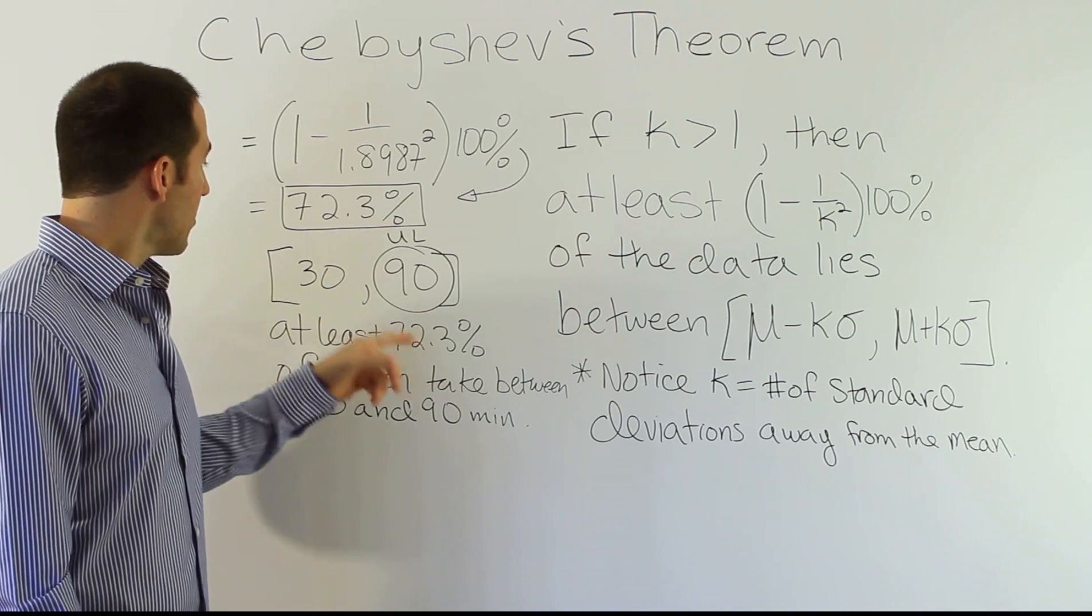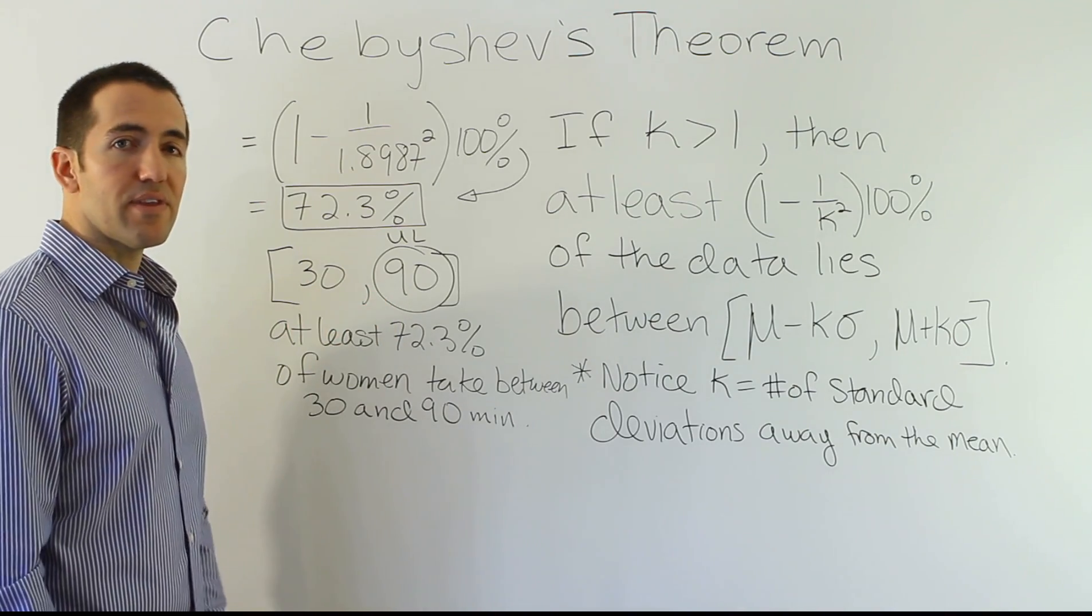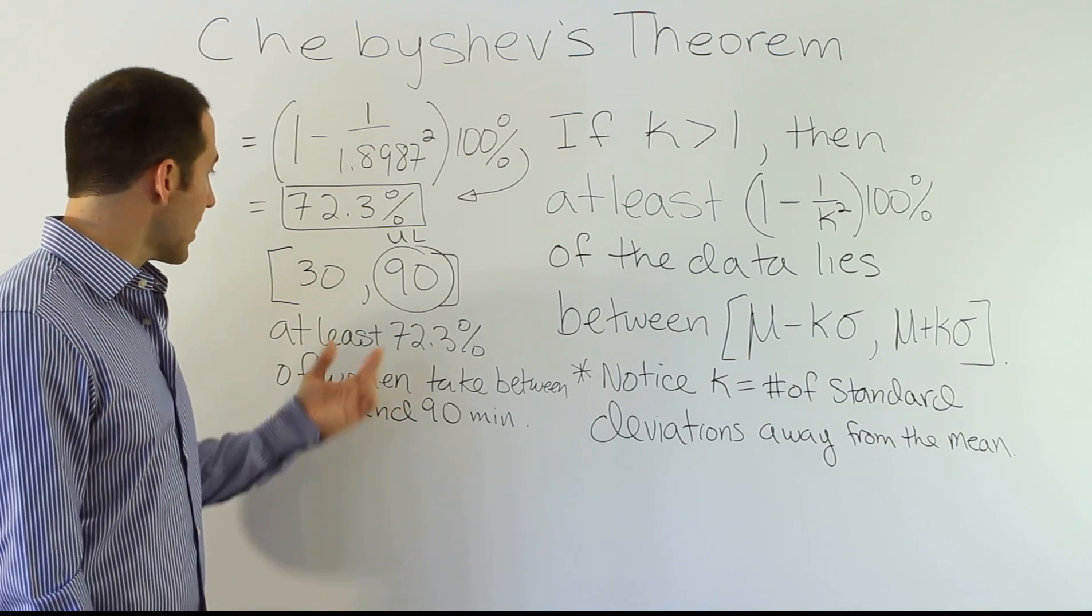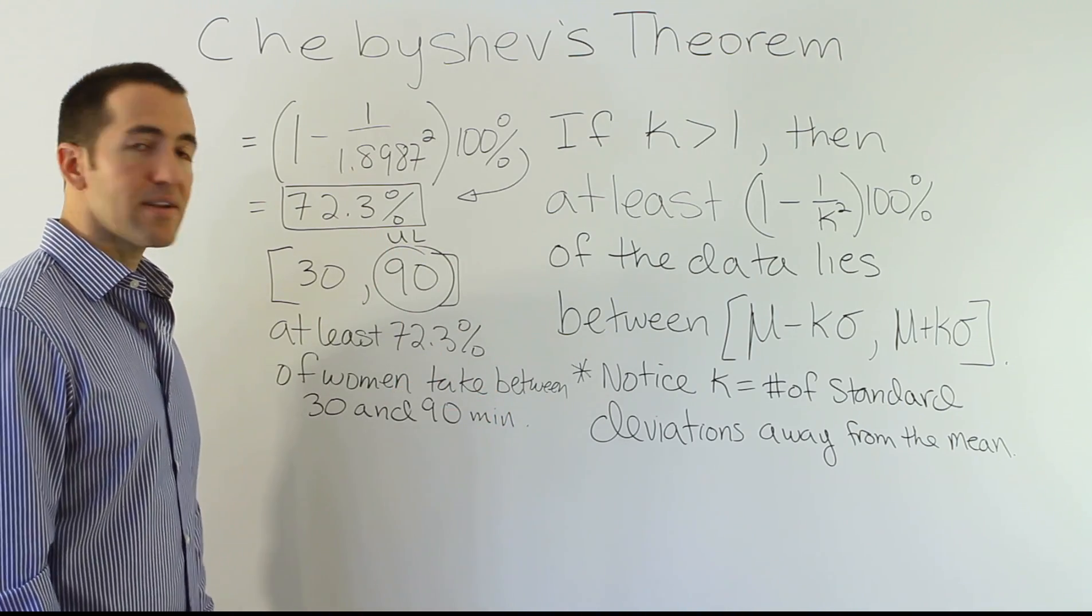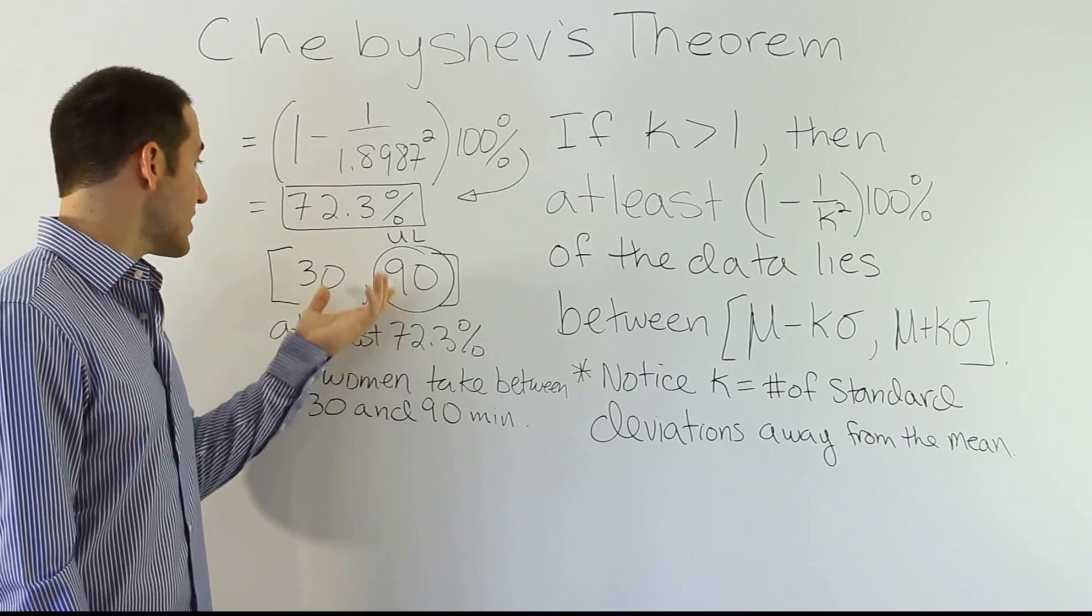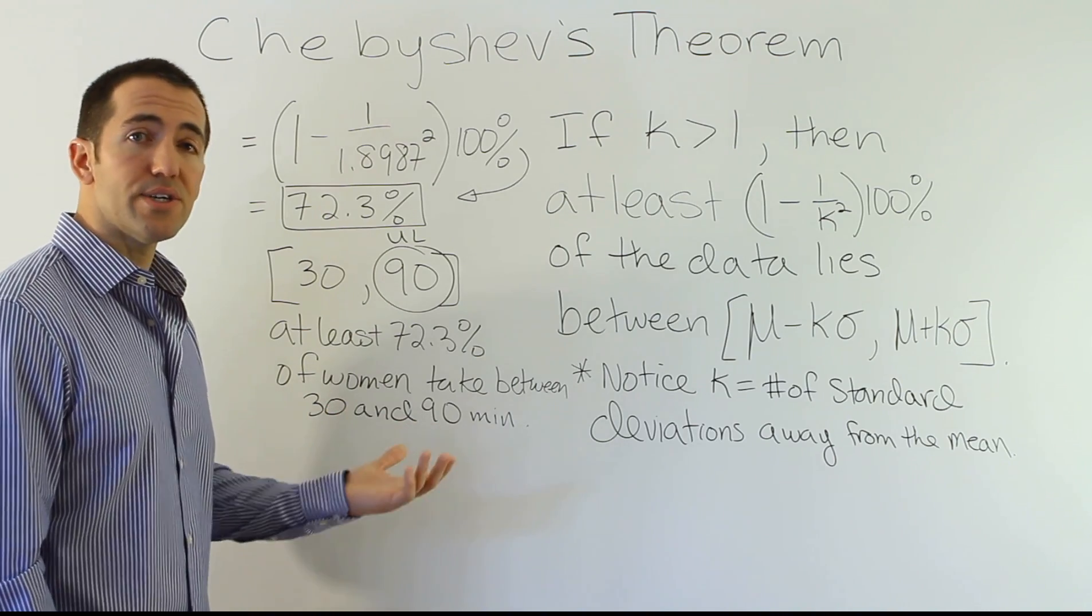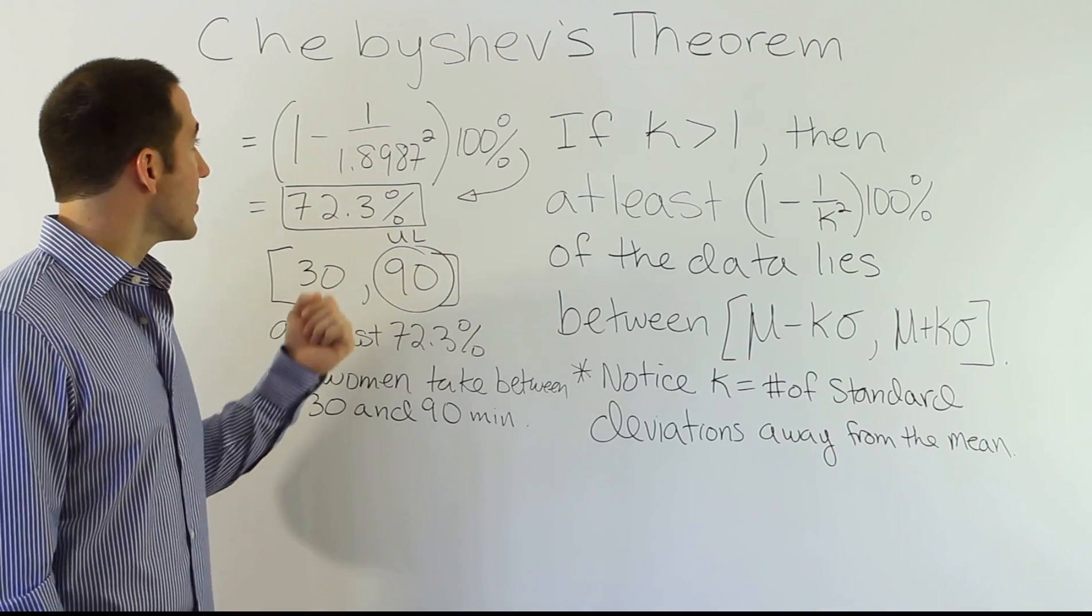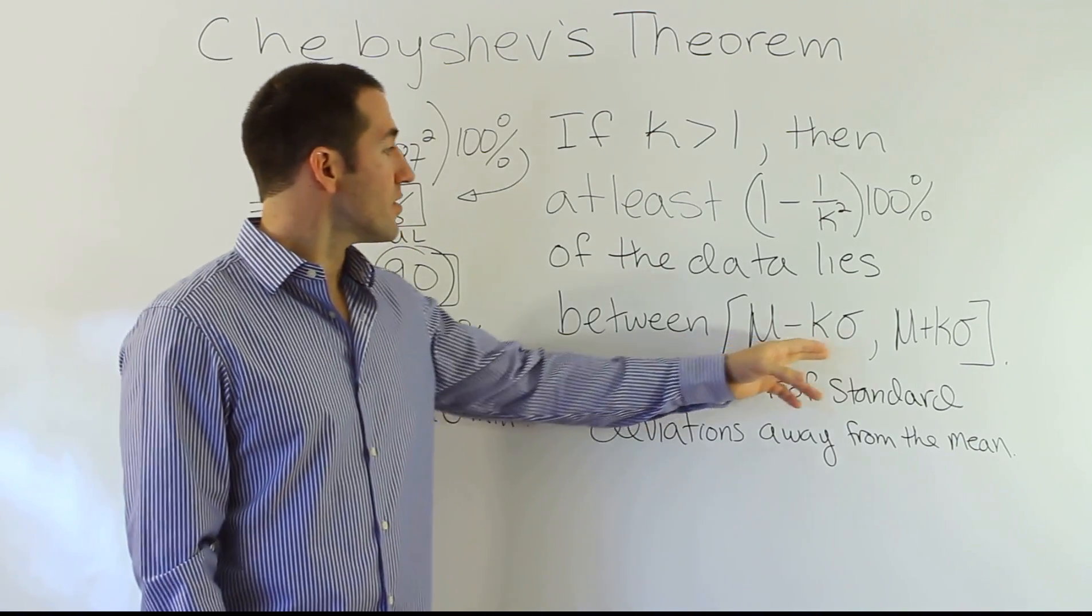The simple thing we know is that no less than 72.3% of the data is inside of here. It could be much more, but it isn't going to be any less. So, it gives us a minimum amount that the interval contains. So, that's a really helpful thing, actually, in many cases. When you do the problem videos, you're going to see how many times this theorem produces an interval, or produces a percentage of the interval that's going to be really informative for us. It will help us make decisions in real life, just by knowing the simple quantities of the mean and the standard deviation.